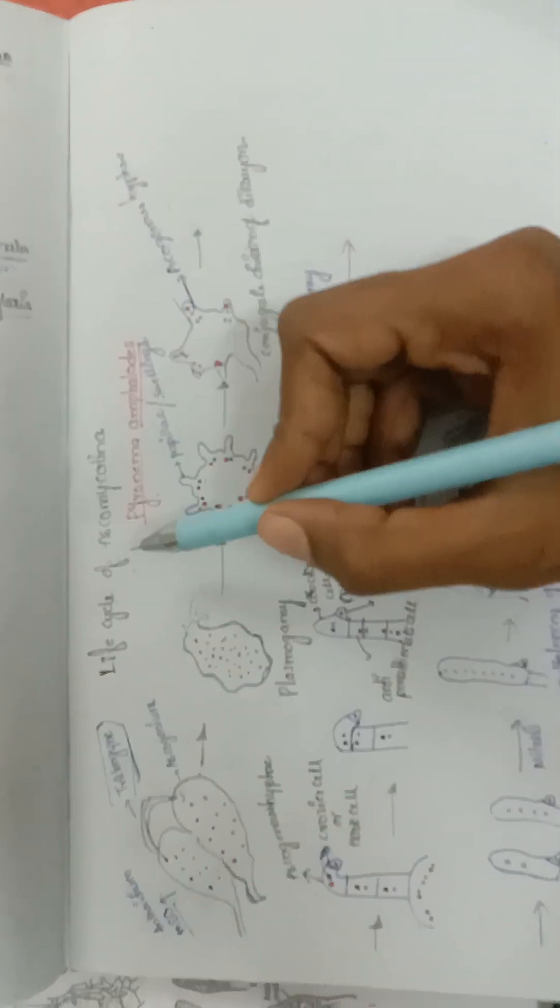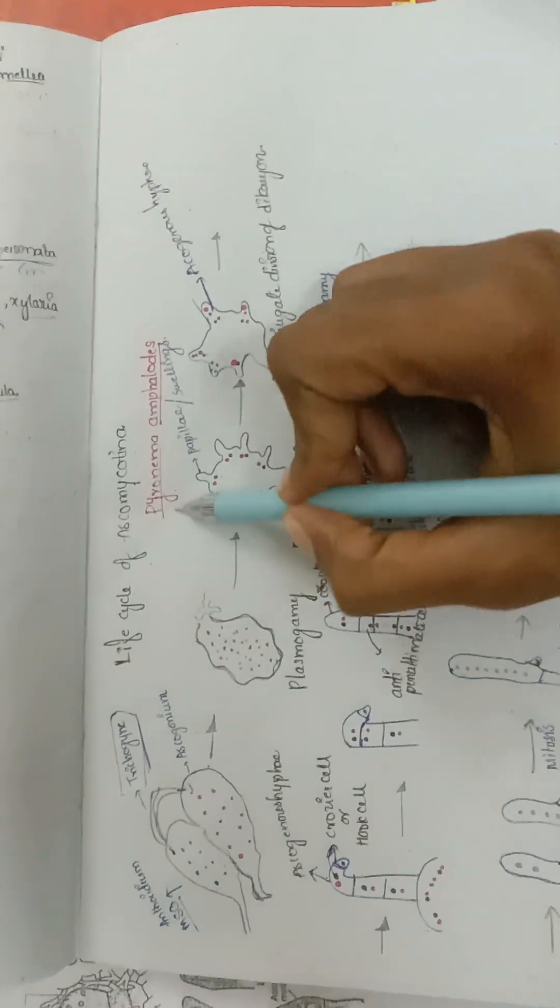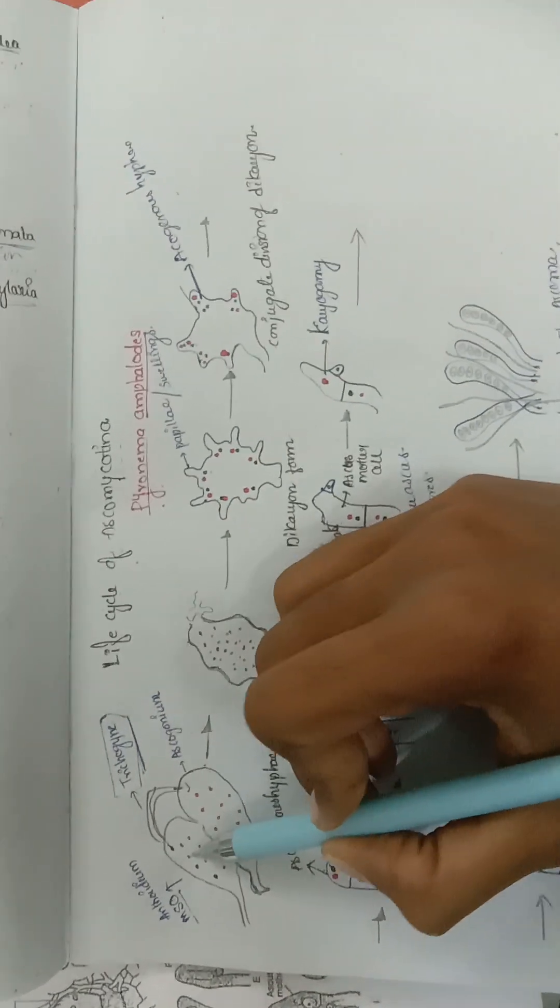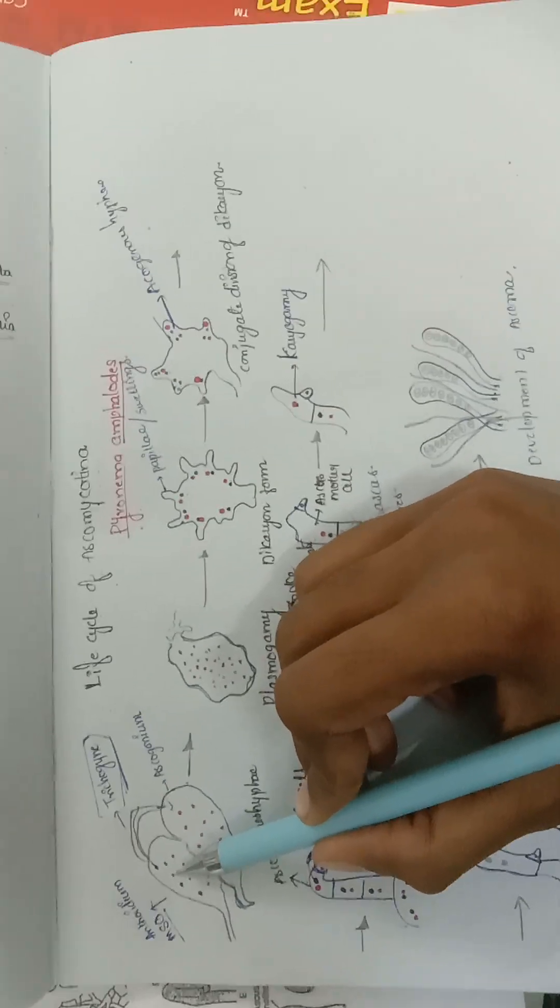Hello everyone, today we are going to discuss the life cycle of Ascomycotina, and an example for this is Pyronema amphidolus. In this organism, it has male and female sex organs.